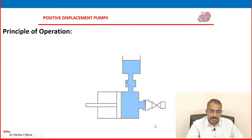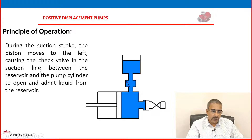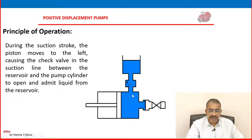During the suction stroke, the suction check valve is in the open position and the discharge check valve is in the closed position. The piston moves to the left, causing the check valve in the suction line between the reservoir and the pump cylinder to open and admit liquid from the reservoir. This is how the piston and cylinder reciprocating pump works.